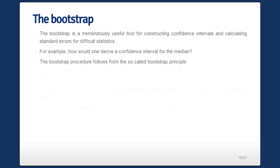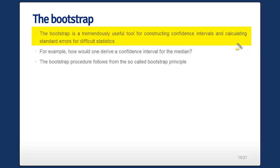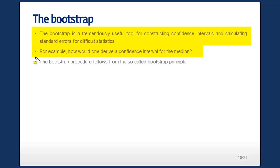Now let's talk about the big gun — the bootstrap. The bootstrap is probably one of the most important tools ever discovered in statistics. It's a tremendously useful tool for constructing confidence intervals and calculating standard errors for difficult statistics. Before, we saw the jackknife didn't appear to work very well — so how do we get a confidence interval for the median? The bootstrap procedure follows the so-called bootstrap principle.